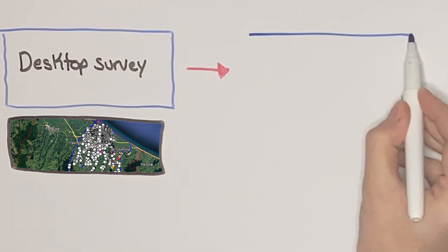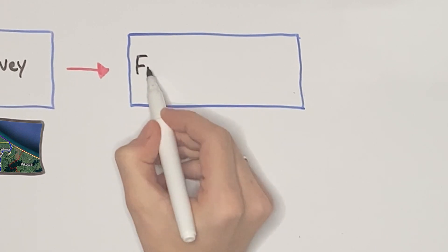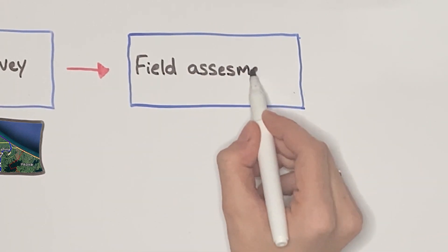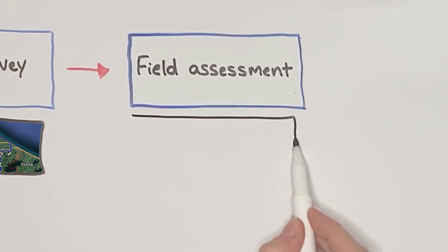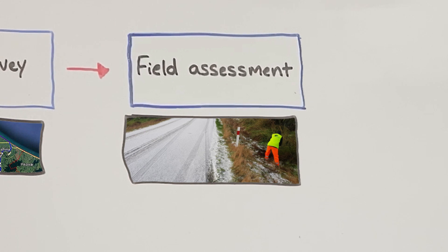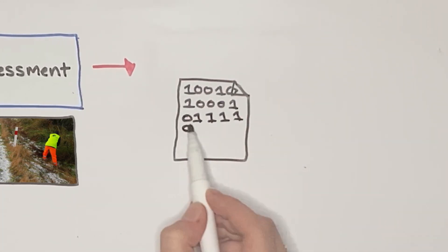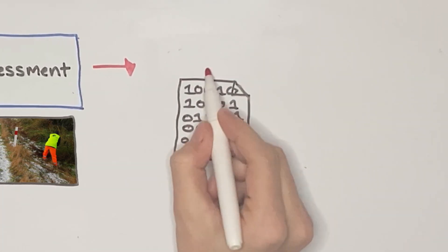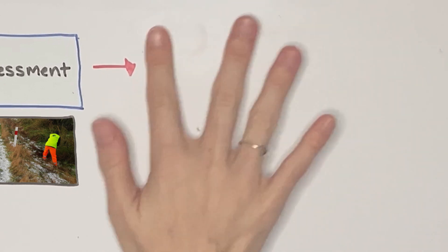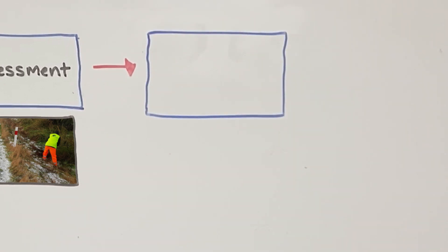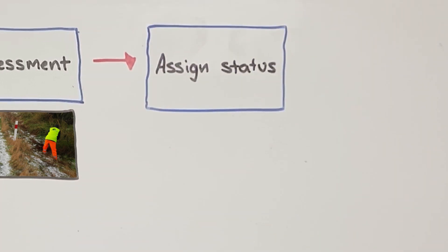Next, we head out to the target sites and assess what we find by collecting measurable attributes on a field app. The data gets uploaded and processed by clever algorithms to tell us what we need to know. Each site is given a current status and that determines what happens next.